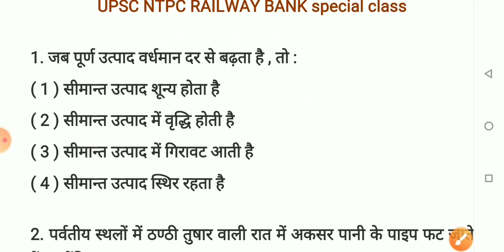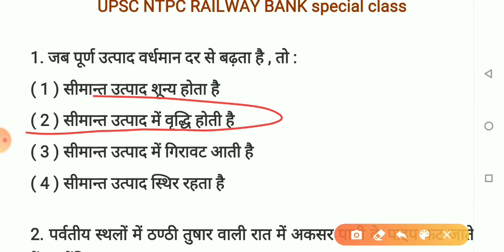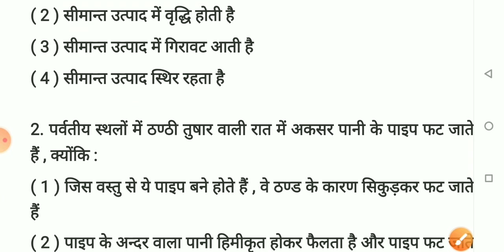Question number 1: Jab purna utpad vardhman dar se badhta hai to kya hota hai? Option 1 - simant utpad shunya ho jata hai. Option 2 - simant utpad mein vridhi hoti hai. Option 3 - simant utpad mein girawat aati hai. Option 4 - simant utpad sthir rehta hai. Sahi answer hai option number 2: simant utpad mein vridhi hoti hai. Jab purna utpad vardhman dar se badhta hai, yaad rakhiye.